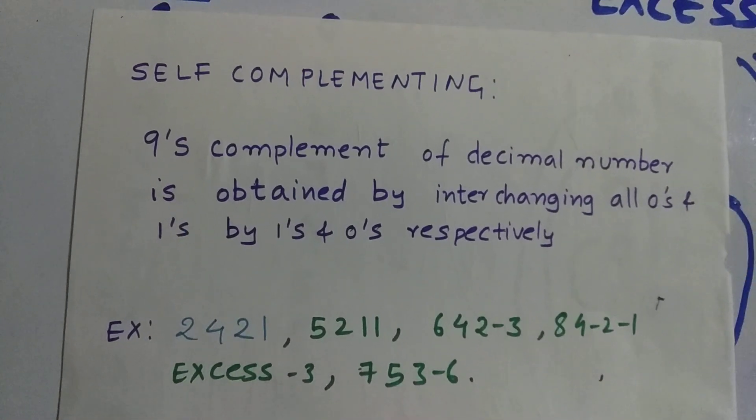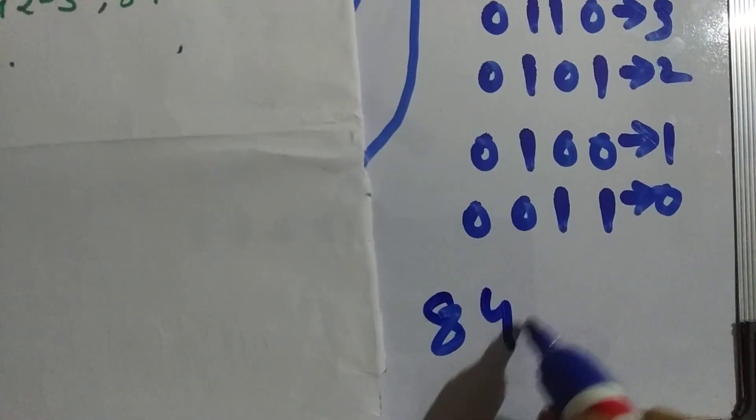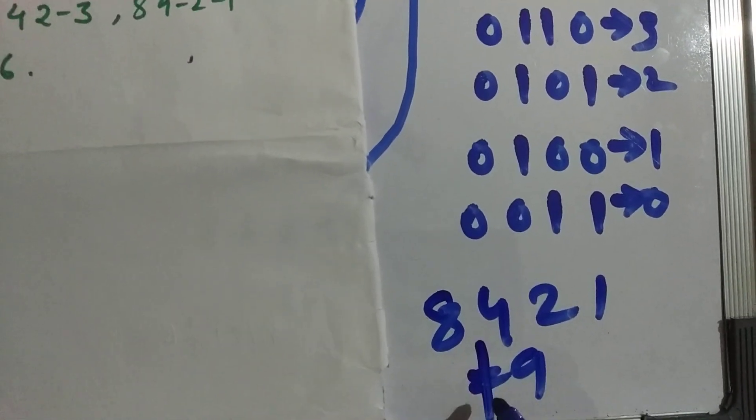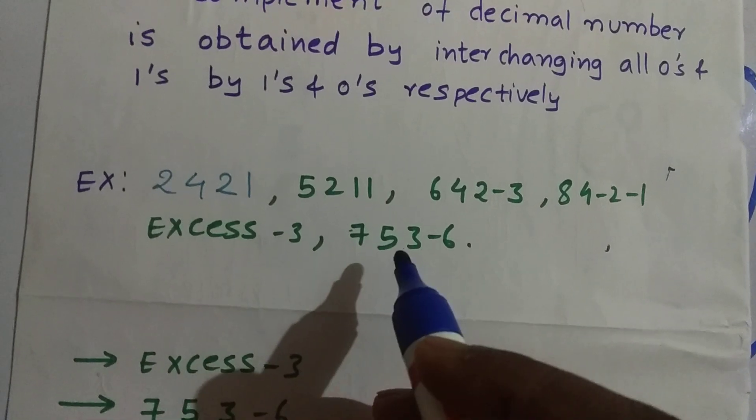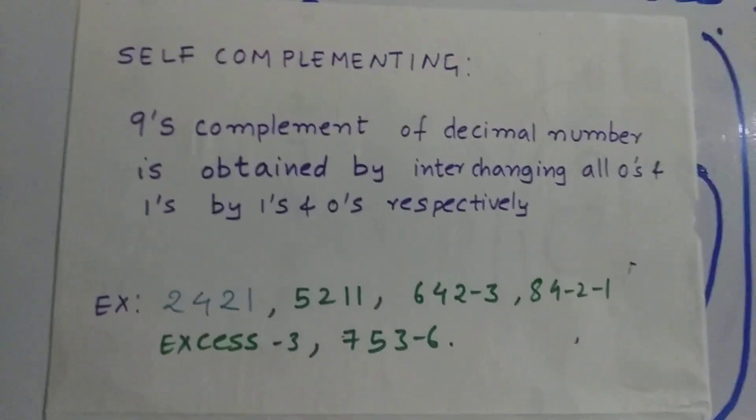If you don't get 9 as the answer, for example, you take 8-4-2-1, you won't get sum equals 9. This is not a self-complementing code. Here, you add 7-5-3-minus-6, this is a self-complementing code. I hope you have understood.